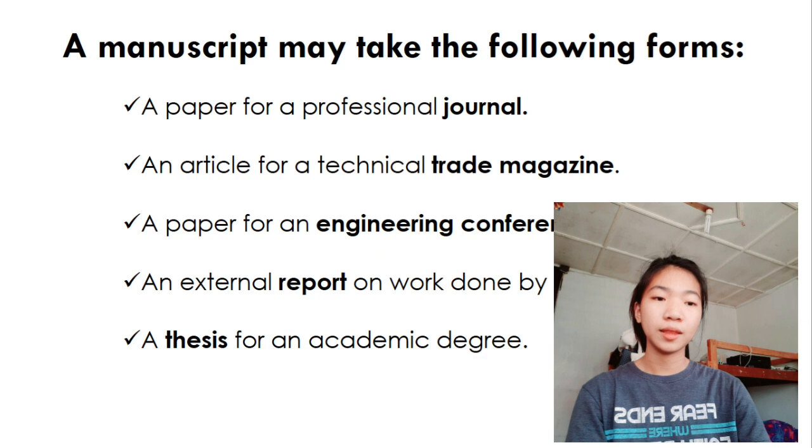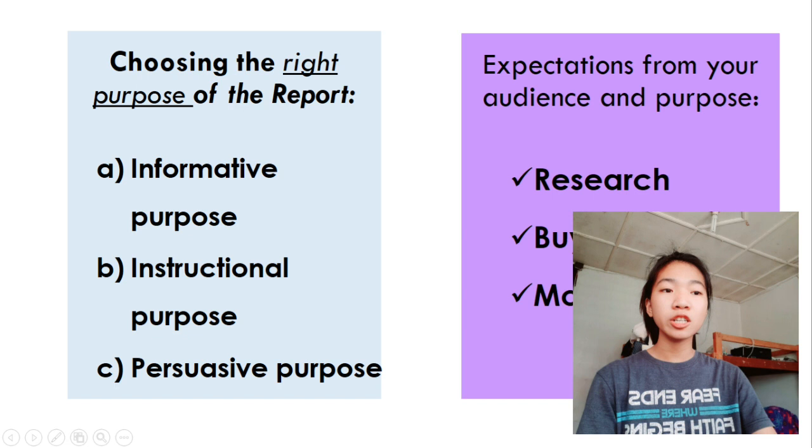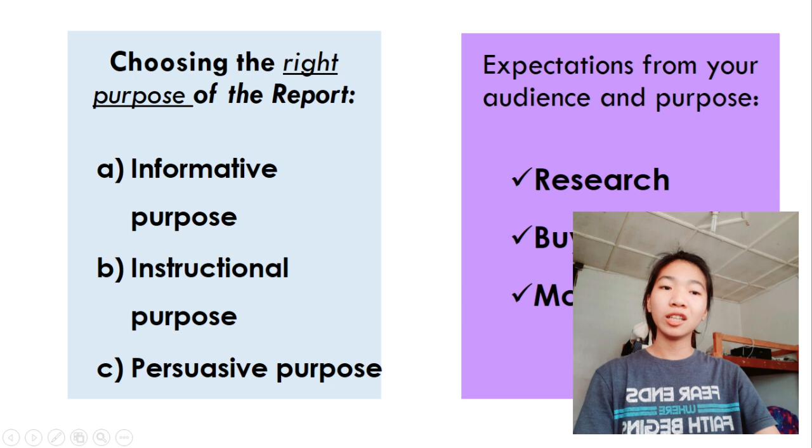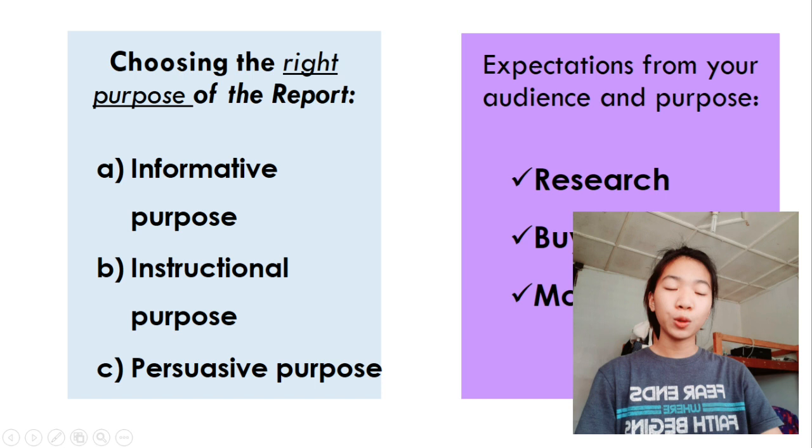Knowing the potential reading public will be a critical determinant in choosing the right purpose. Because there are three types of purpose. It can be informative, instructional, or persuasive. When we say informative purpose, this is the main purpose of many written technical reports, which gives the reading public information or facts. For example, to describe a device, a process, method, or system to analyze a problem, or to develop a theory.